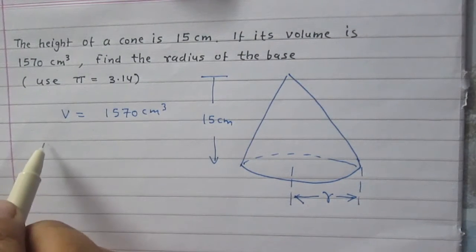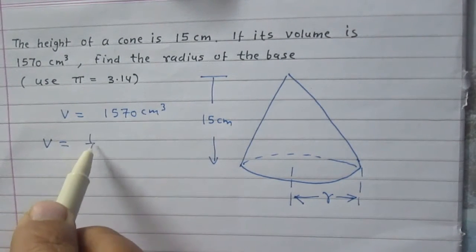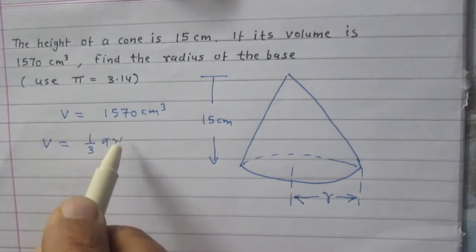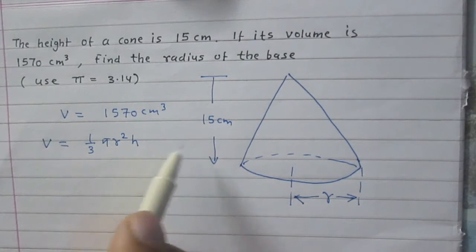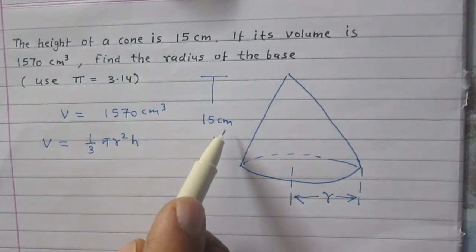We know that the volume of a cone is V = (1/3)πr²h, where r stands for the radius of the base of the cone and h is the height of the cone.